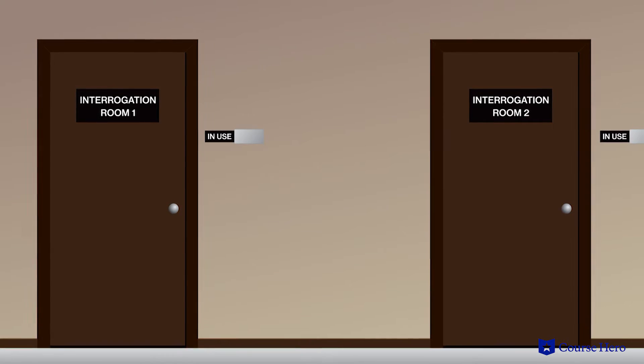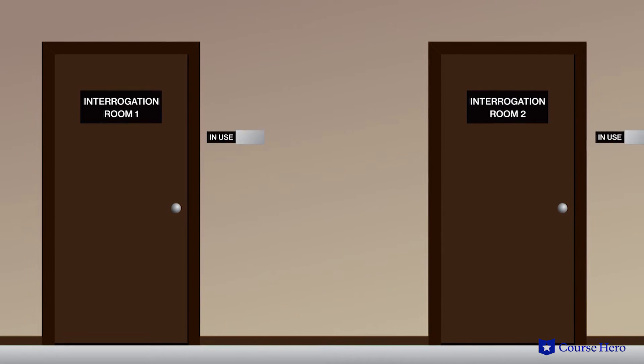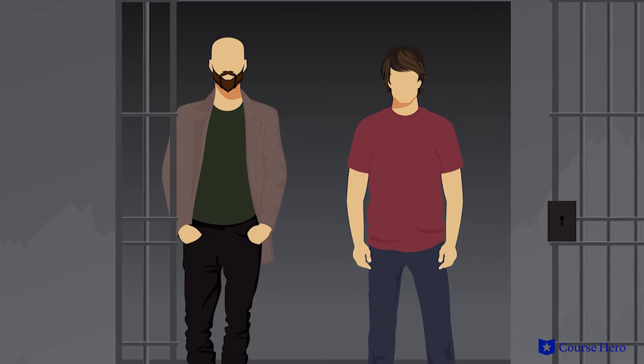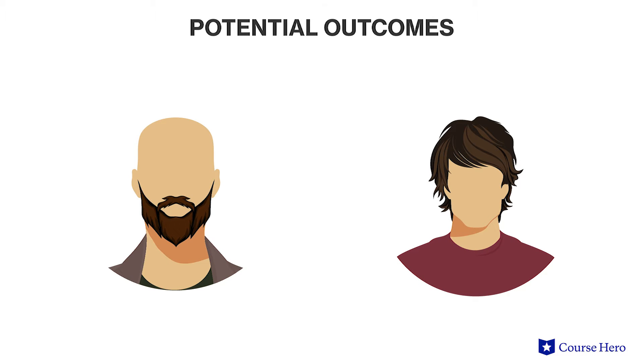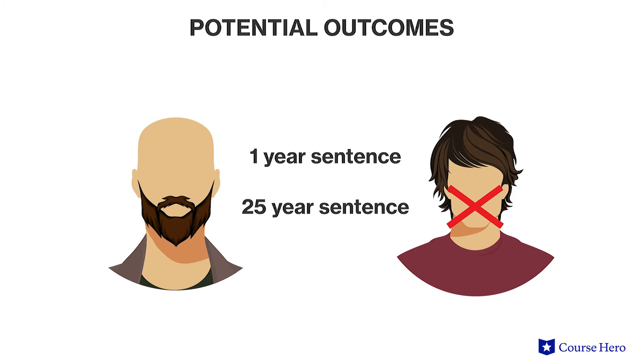Therefore, they arrest Walter and Jesse, put them in separate interrogation rooms, and offer each the exact same deal. The police know Walter and Jesse manufacture and sell large quantities of narcotics, and a conviction will get them a sentence of 25 years. But the police don't have enough evidence for that crime right now. However, they can convict Walter and Jesse on a weapons charge that will land each of them in jail for three years. If Walter or Jesse confesses to manufacturing and selling narcotics and testifies against their partner, they'll only receive one year in jail and their partner will receive a 25-year sentence.